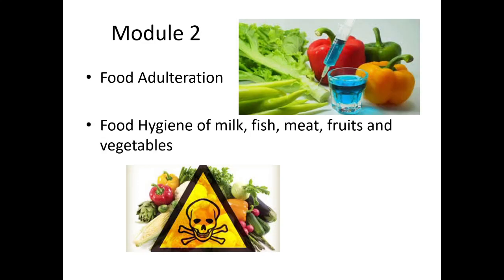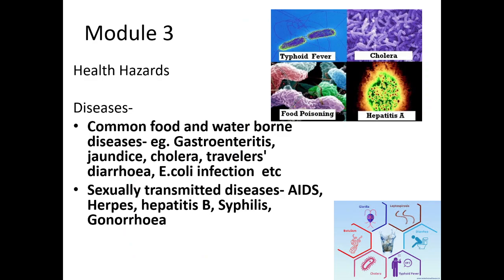Module 2 covers food adulteration — what it is, which chemicals are used as adulterants, how to identify those chemicals, and their harmful effects on our body. It also covers food hygiene of milk, fish, meat, fruits, and vegetables.